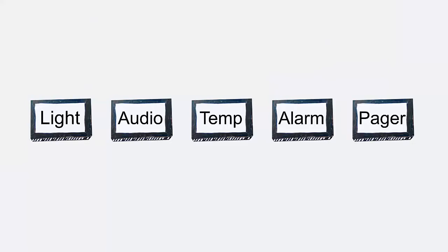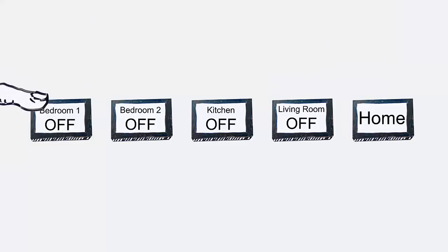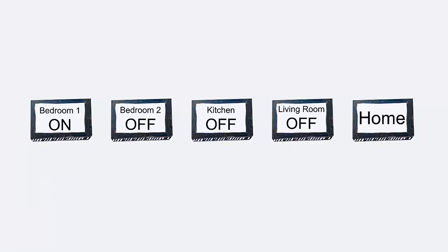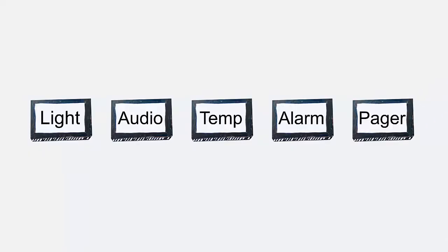For example, when pressing the light button, the functionality of the five smart switches dynamically changes to display control options for the lights. By pressing the bedroom one button, the user can turn on or off the lights in that bedroom by simply pressing that same button. A quick press of the home button returns the user to the main menu.